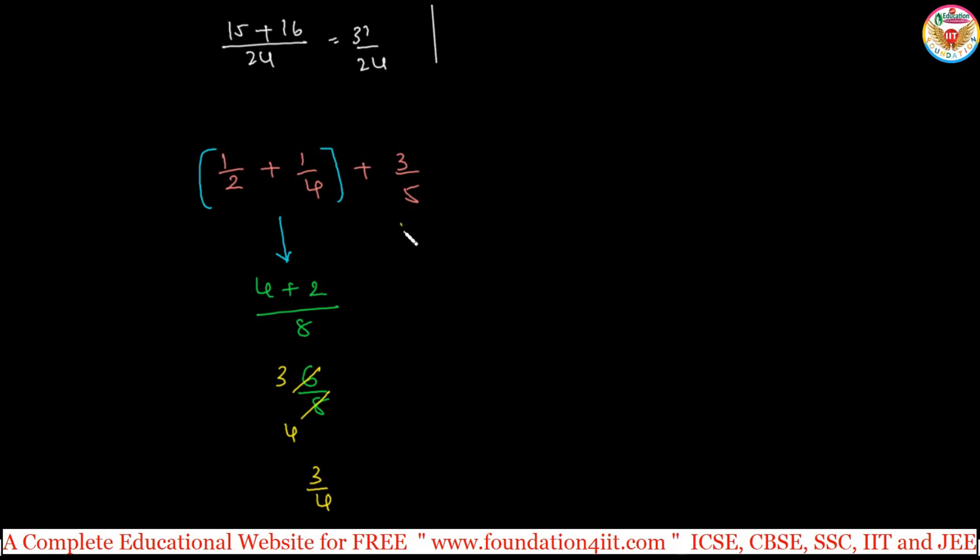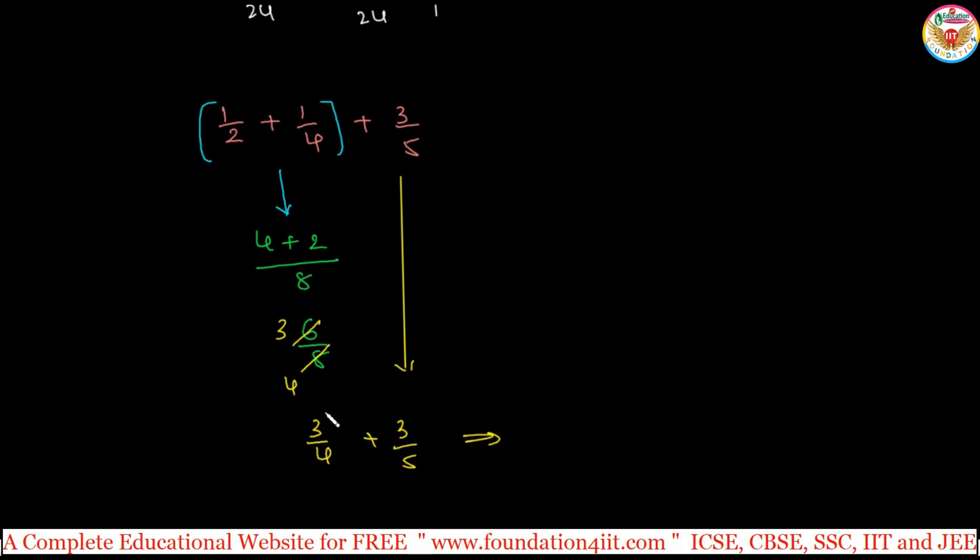So finally the answer is 3 by 4. Immediately the next one, third one, that is 3 by 5. Again you can apply the same method, only the cross. 3 into 5, just this is the method you remember: cross and down. 3 into 5 is 15, plus 4 into 3 is 12. 4 by 5 is 20. 27 by 20.